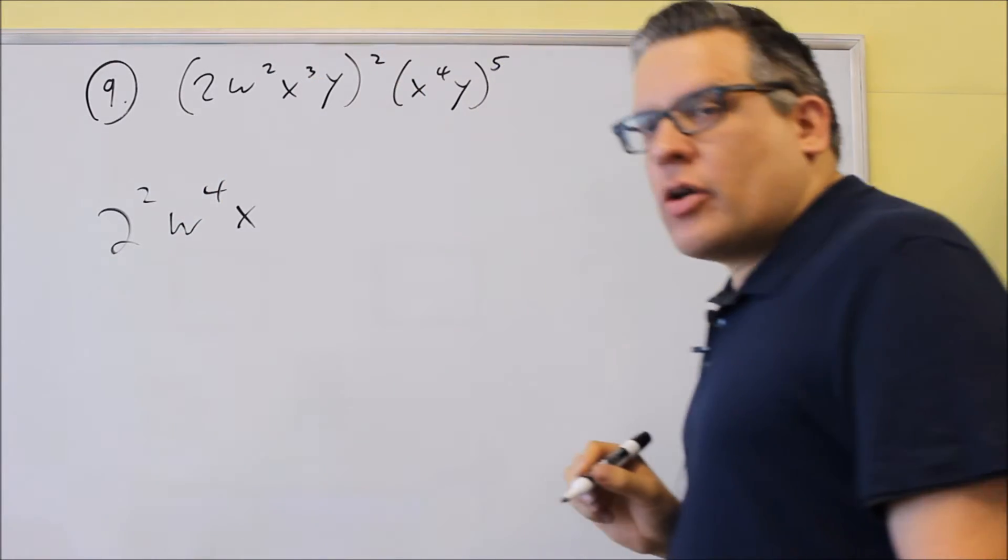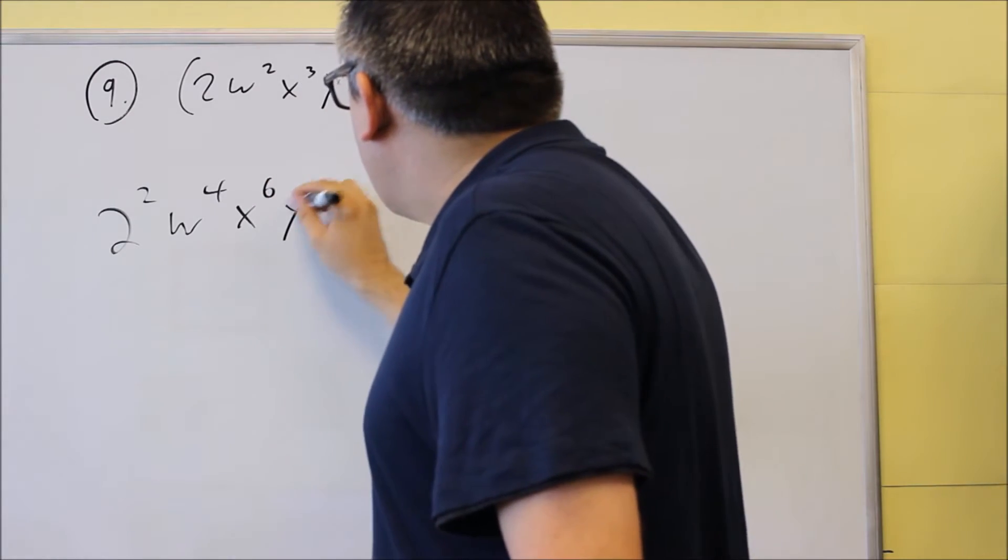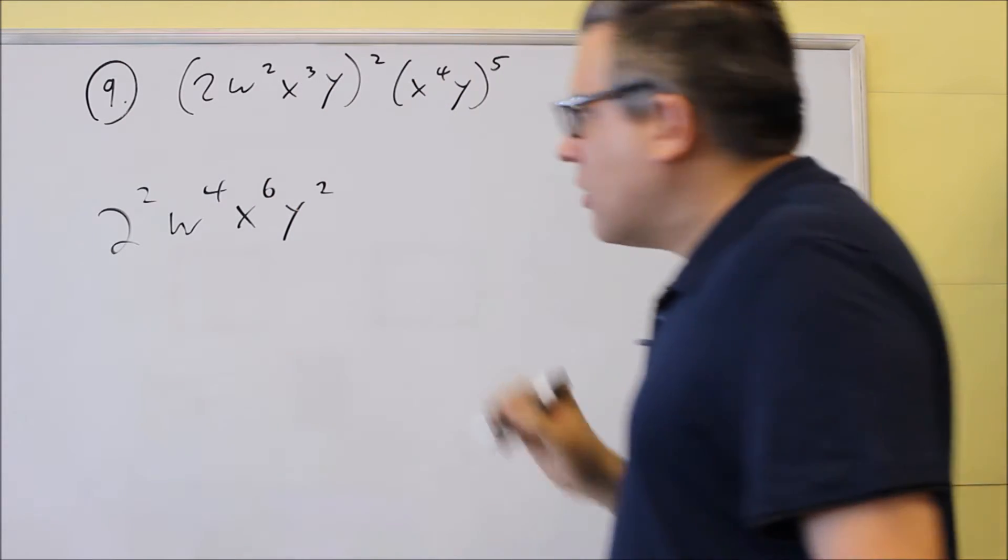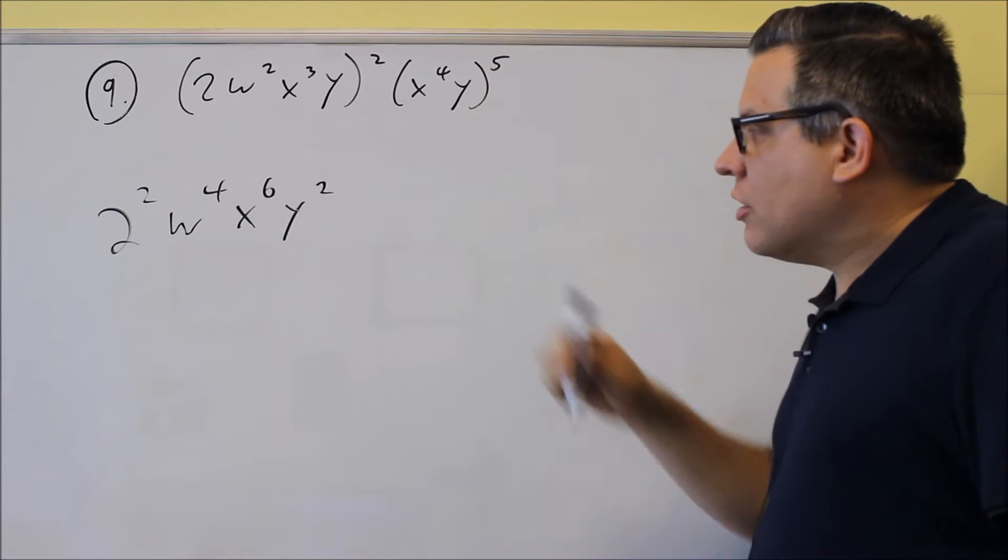X, I'm going to multiply those exponents. I get X to the sixth, and I get Y squared. There's a 1 inside there, so 1 times 2. That's why you get Y squared there.